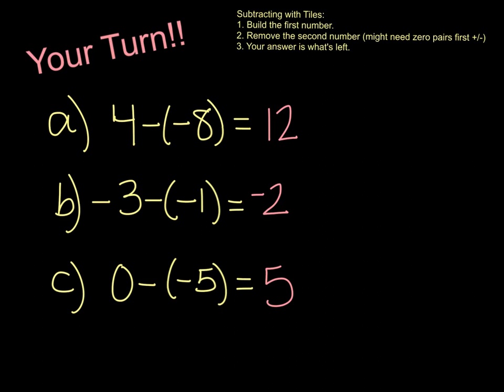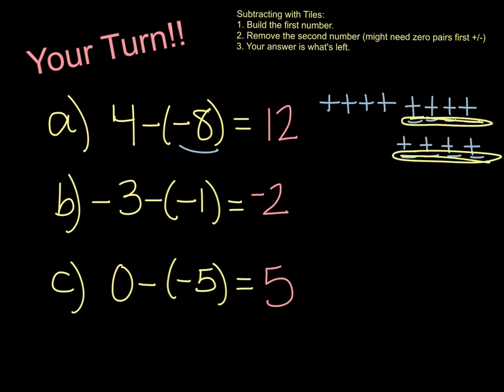All right, so the first one here, I would have 4. And I want to remove negative 8. I don't have any negatives, so I'm going to add 8 0 pairs. There's 3, 4, 5, 6, 7, and 8. And when I remove 8 negatives, remove those and those, I count up what's left. That's where my answer of 12 came from.